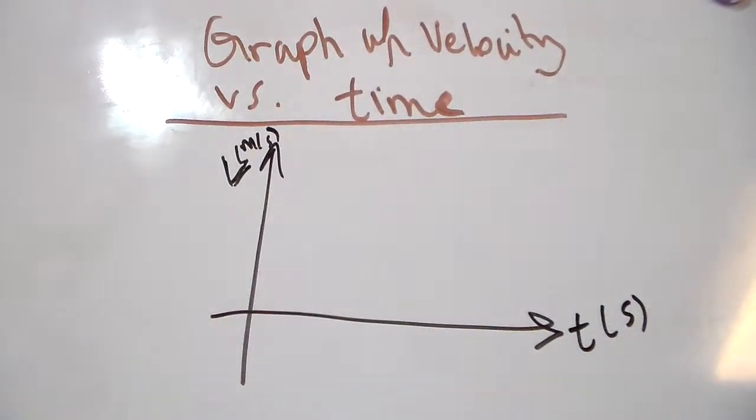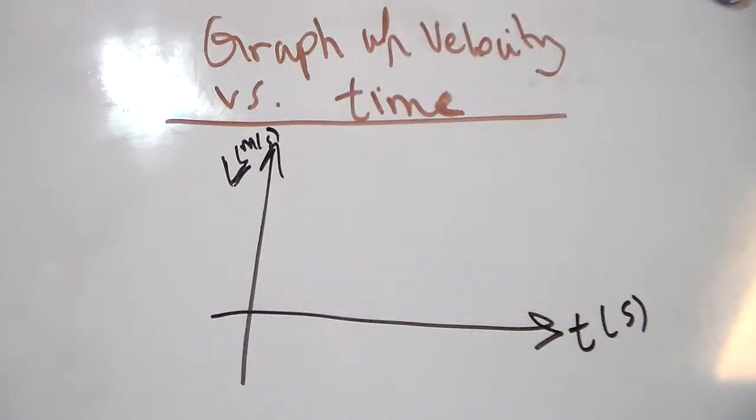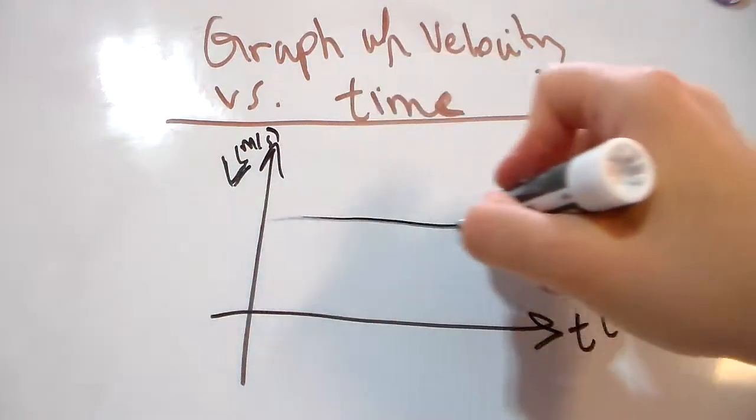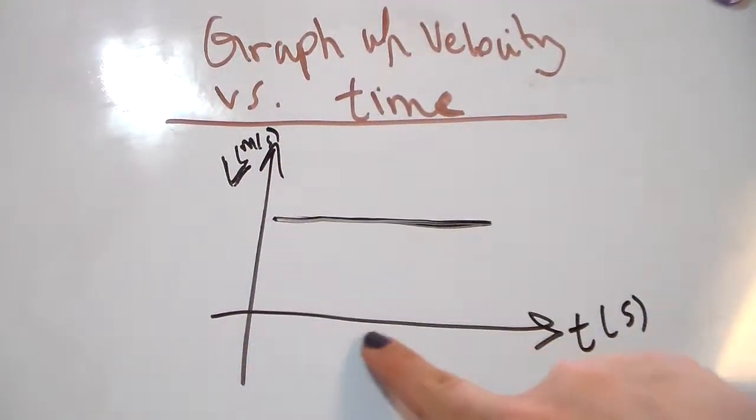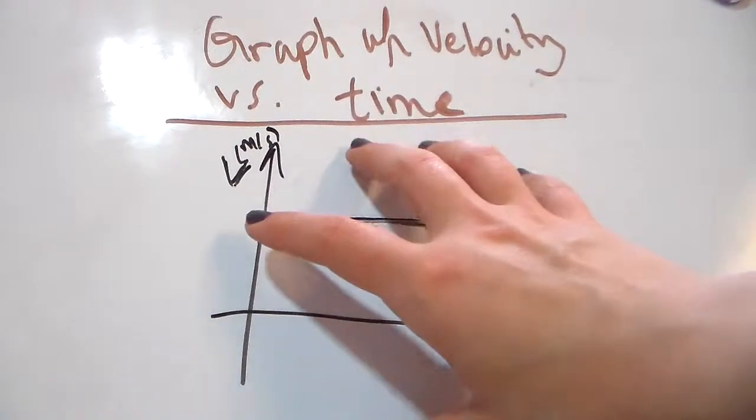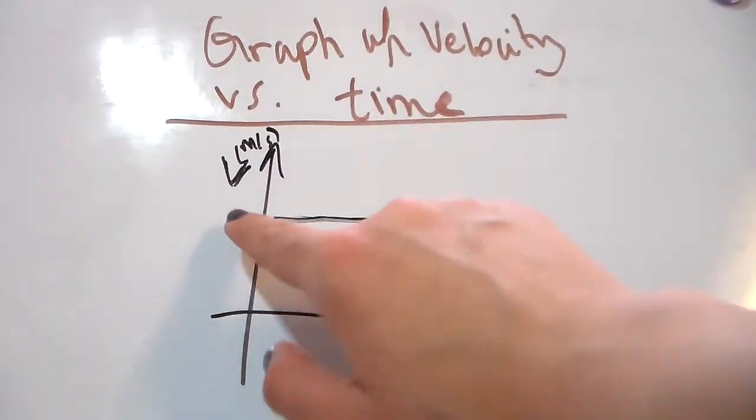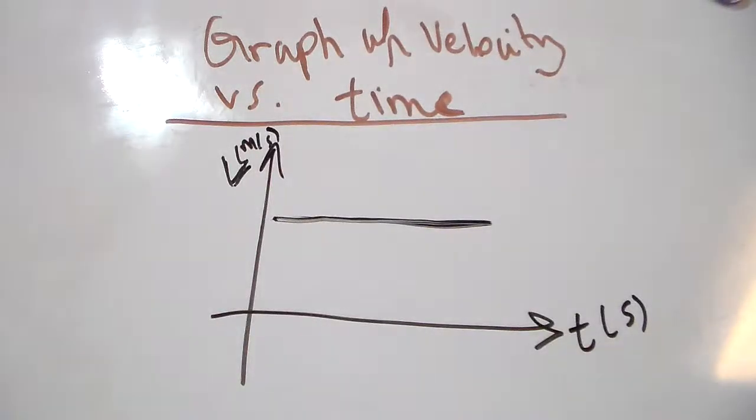They basically show you what the speedometer on your car shows at different instances. So if it looks like this constant line, it means that no matter when we're looking at the speedometer, the velocity shows the same number. As you see, the velocity here is positive - it's above the x-axis.